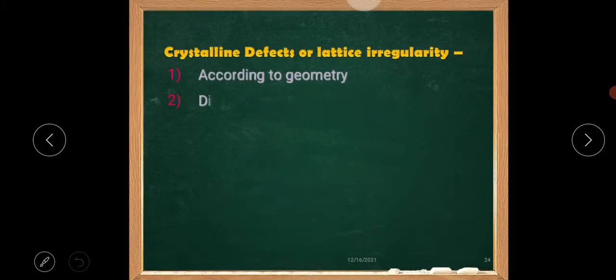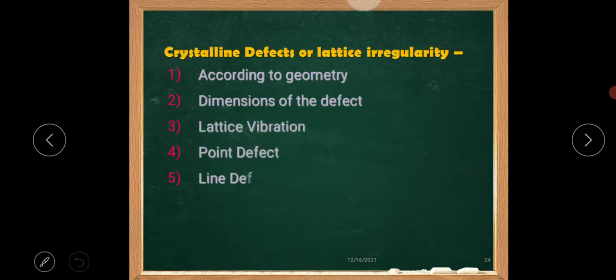Crystalline defects or lattice irregularity. That is categorized according to the geometry, dimensions of the defect: lattice vibrations, point defects, line defects, surface defects.